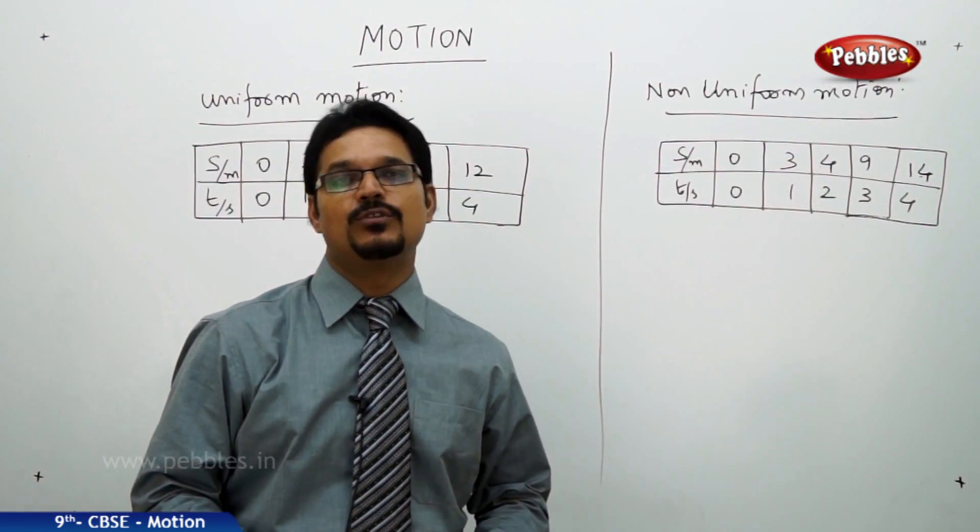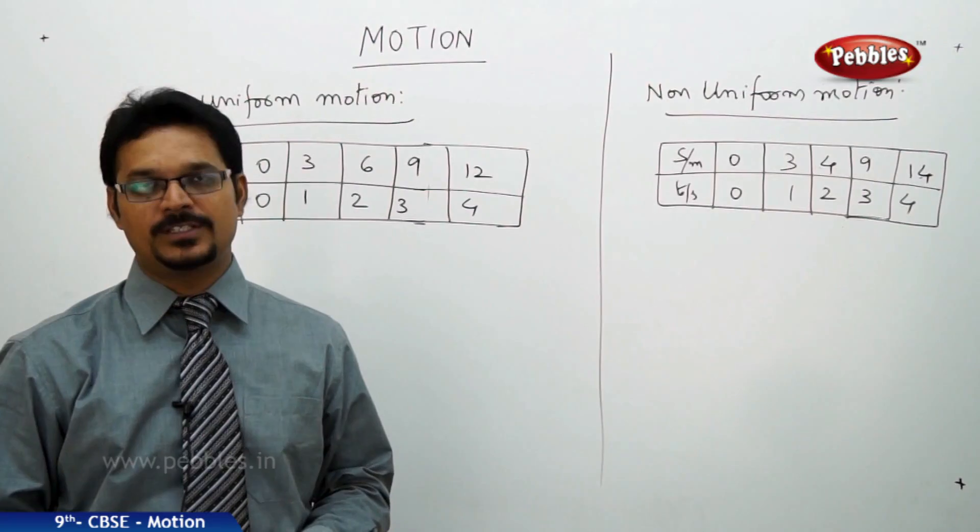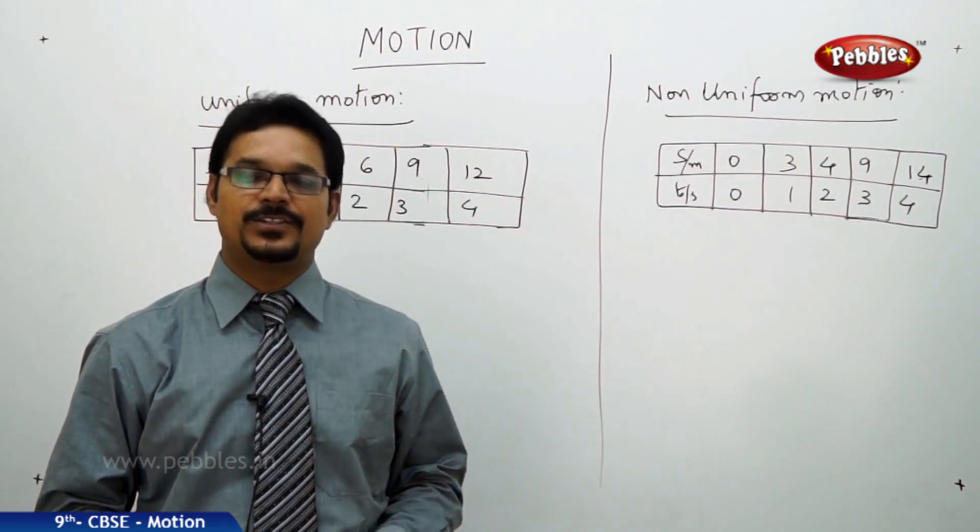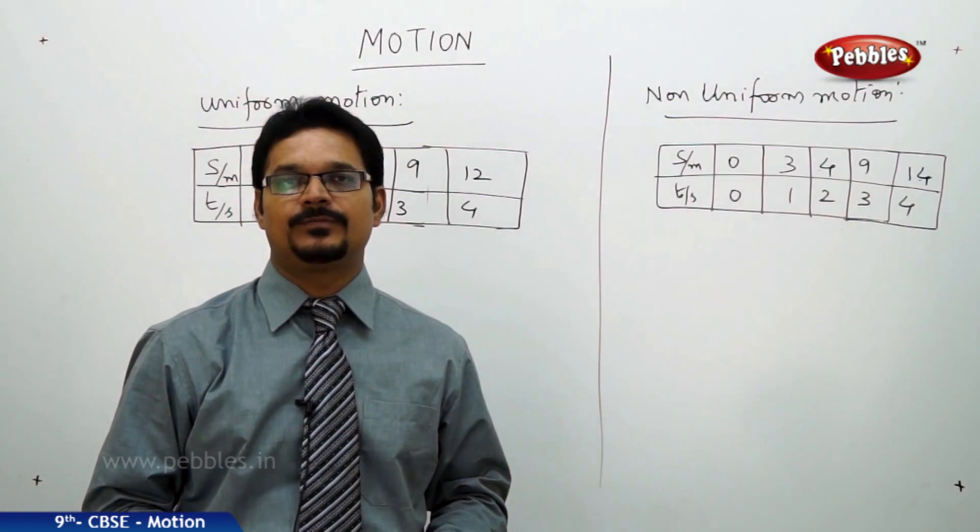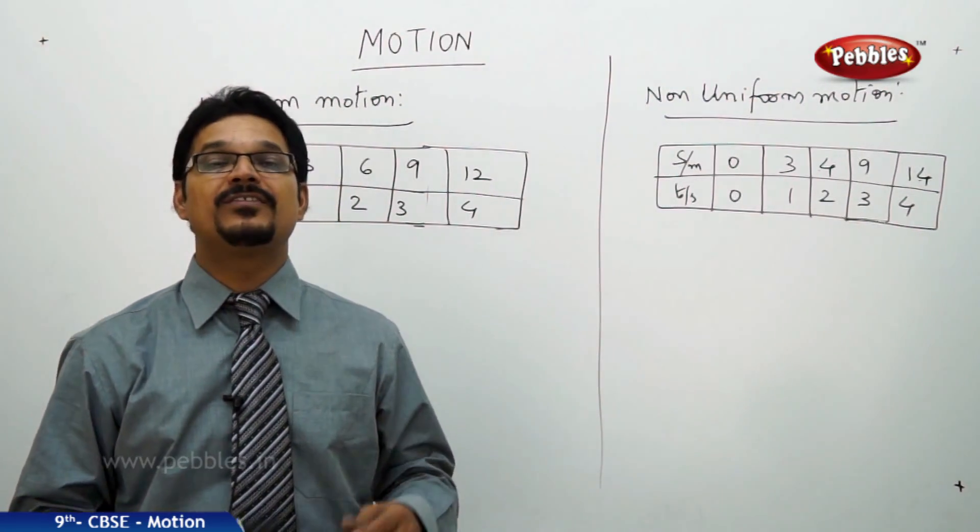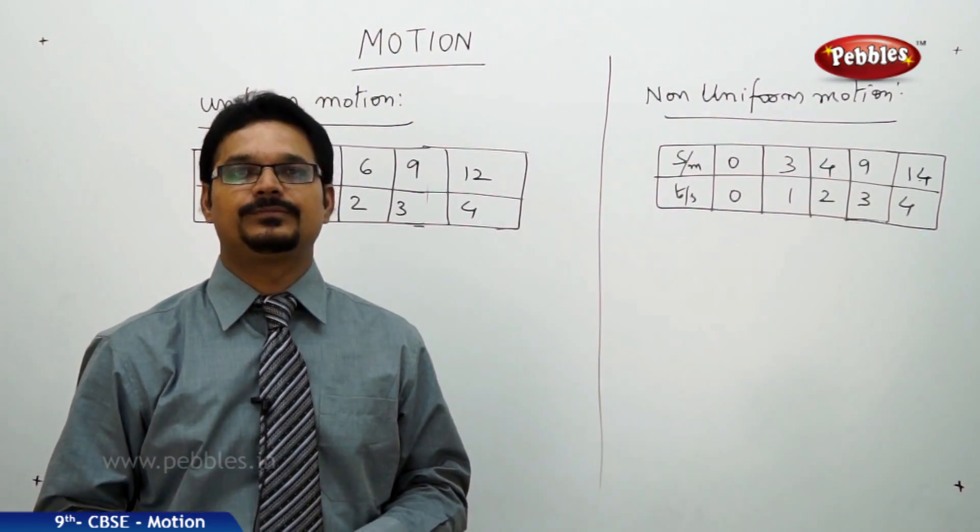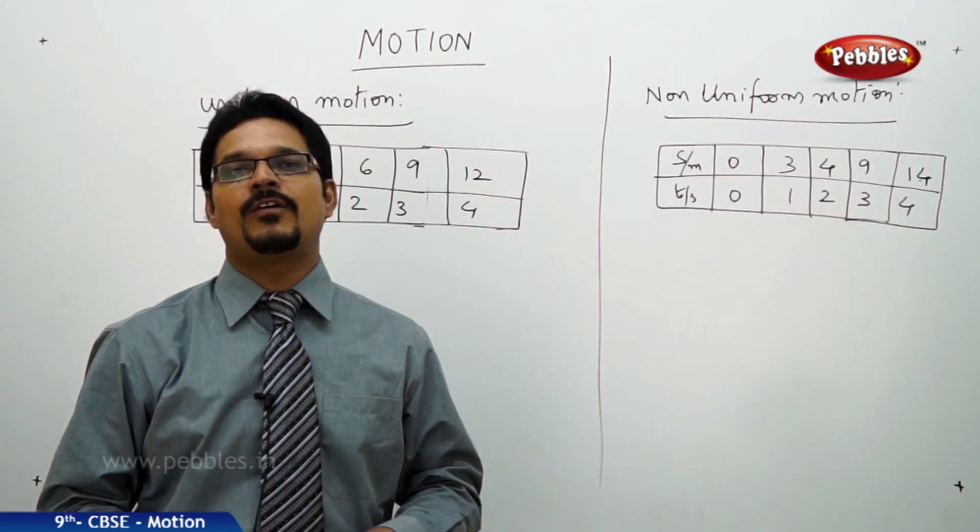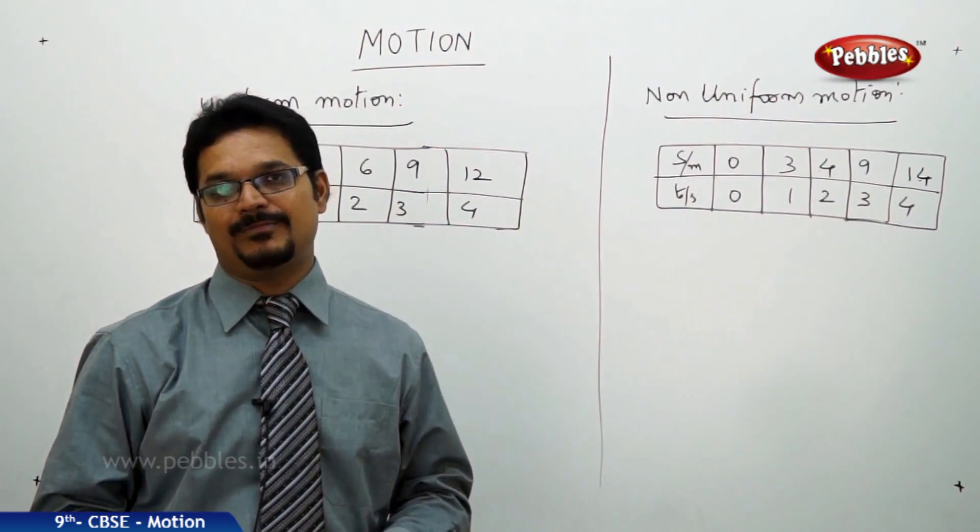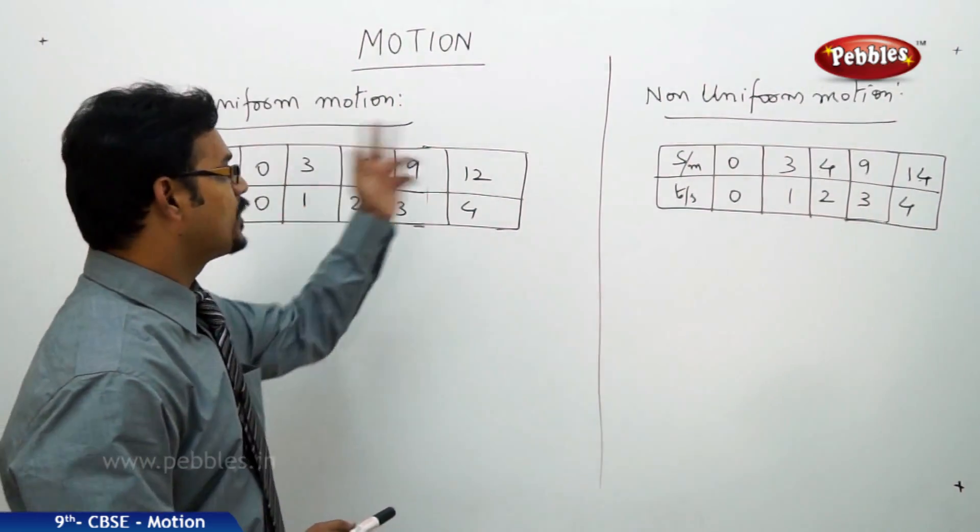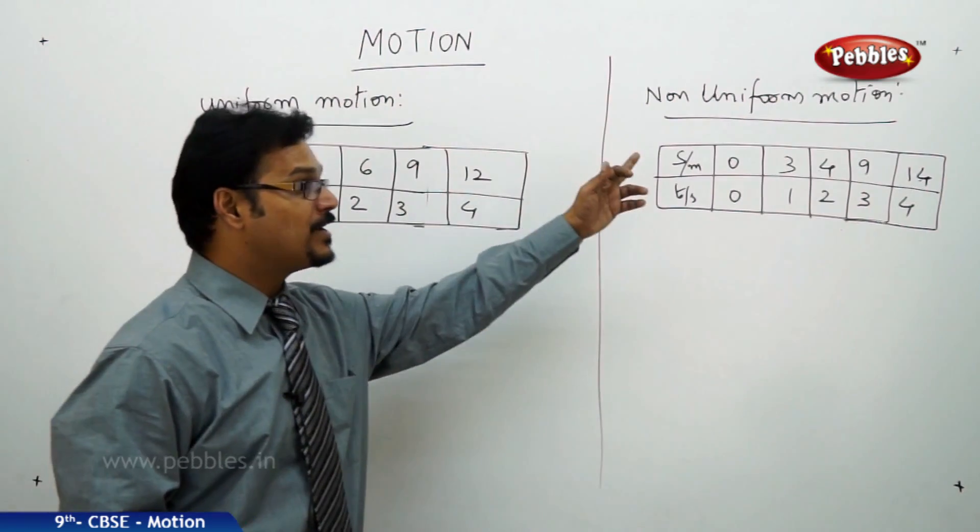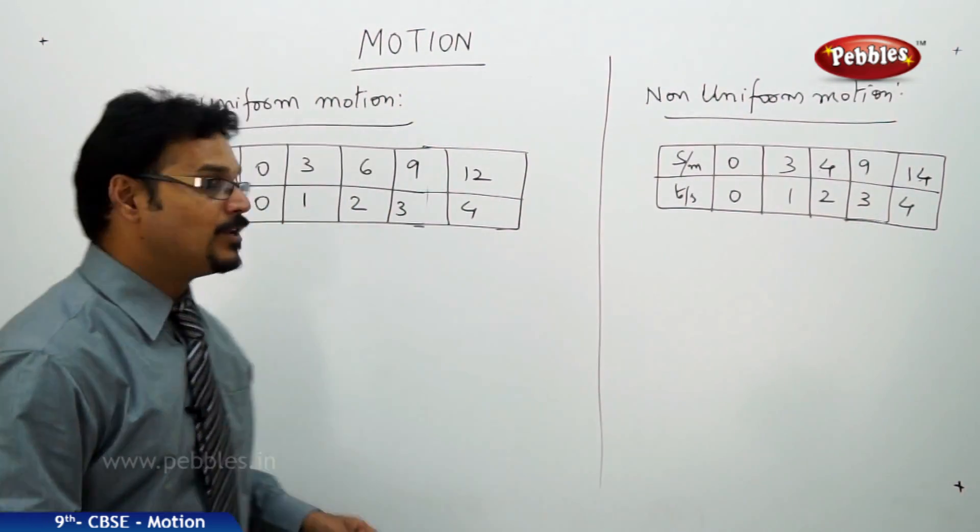So far, we have discussed about distance, displacement, speed, velocity and acceleration. In the beginning of the chapter, I told you that we have different types of motions. But in that, our focus is on linear motion. And in linear motion also, again, we can have two types of motions, uniform motion and non-uniform motion.